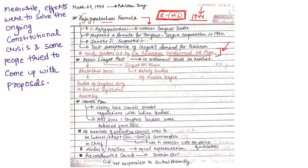Then came the Desai-Liaquat Pact. Bulabhai Desai was the leader of the Congress party in the Central Legislative Assembly, and Liaquat Ali Khan was the deputy leader of the Muslim League. In this plan, 20% seats were reserved for Muslims, but no settlement could be reached between Congress and the Muslim League. This plan also failed, though the concept of parity between Congress and the Muslim League had far-reaching consequences.